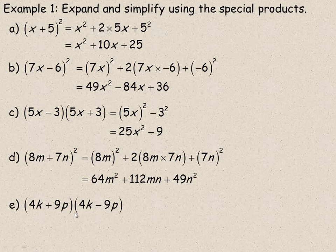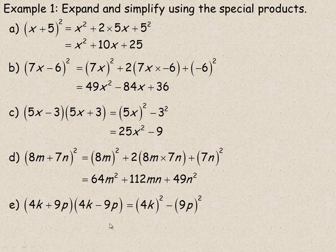Example e is another product of two binomials that are the same except one has a plus and one has a minus — a lot like c. So the middle terms add to zero, and it's just going to be 4k squared minus 9p squared. That would be 16k squared at the beginning, and 9p squared gives 81p squared, so 81p squared subtracted from that.